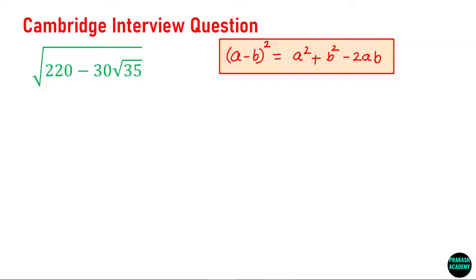I can say that this term is nothing but a² plus b², and this term is nothing but minus 2ab. So this term is 2ab. Now you have to find two numbers a and b such that the product 2 times a times b is 30 times root 35, and if you square and sum then this becomes 220.